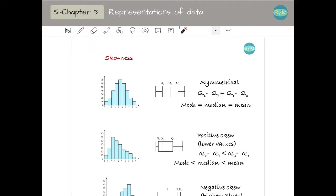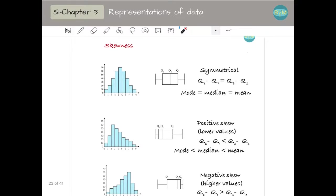So we have three different things. The data is symmetrical when the mode, the median and the mean are the same and the graphs look like this. If you have a box plot, the median is in the middle of the lower and upper quartile or we can say that the difference between Q2 and Q1 is the same as the difference between Q3 and Q2. That's symmetrical, so it looks like perfection.